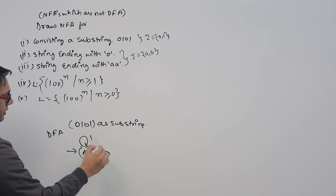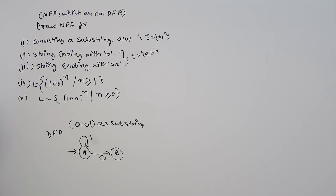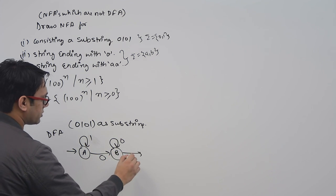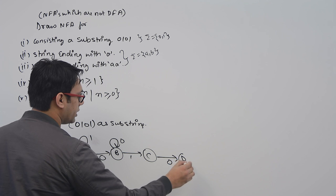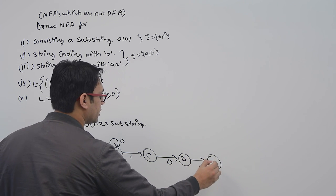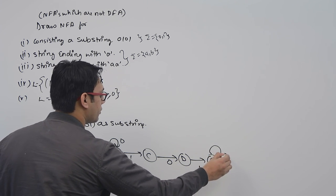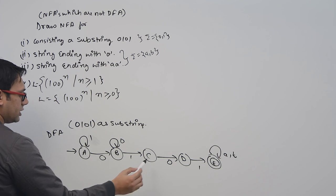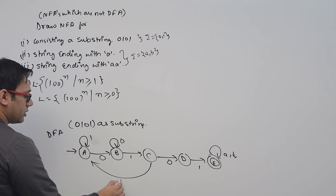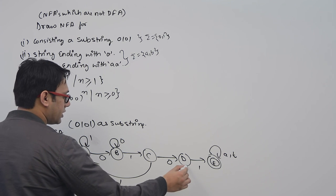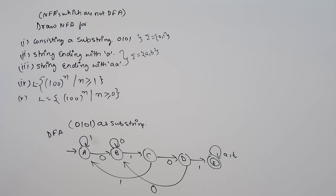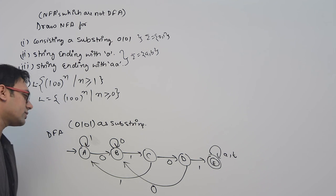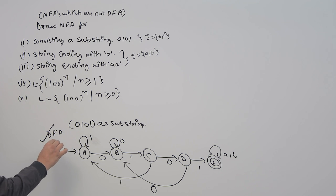As soon as you get 0 you go to state B, then 1 more 0 you go to state C, then you get 1 more 0 you go to state D, then you get 1 you go to state E and you accept it. In state C, if you get one more 1 the pattern is broken. In state D, if you get one more 0 the pattern is broken. So this is representing a DFA, and every transition must be given. This is a DFA which is also an NFA.